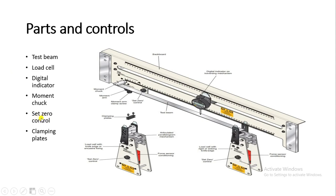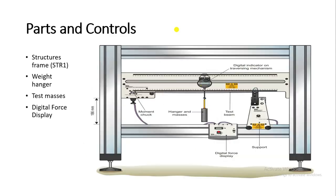The set zero control resets whatever value is showing on the force meter. If you press set zero on either load cell, it turns the reading to zero and measures from that point. Previous values are discarded. The clamping plates make the supports rigid — if you are not using them the supports will be knife-edge or free supports, but placing the beam between the clamping plates makes it a rigid support for fixed beam experiments.